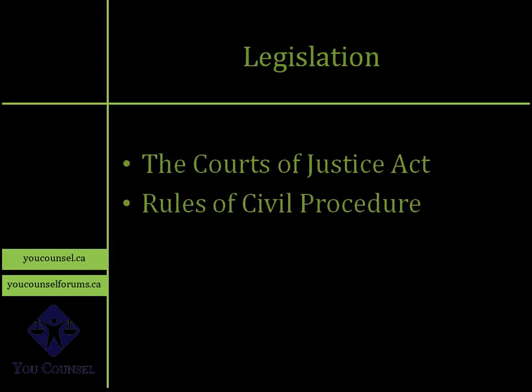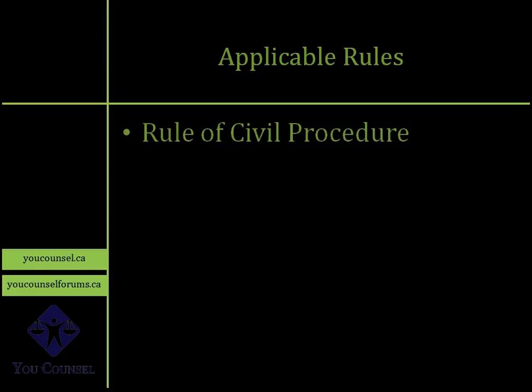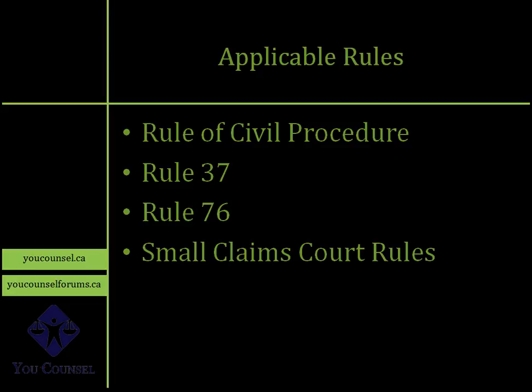There are two fundamental pieces of legislation in Ontario civil courts: the Courts of Justice Act and the Rules of Civil Procedure. Rule 37 is the specific rule that deals with motions. You must review that rule before proceeding and also review any practice directions for your region so you know how motions are brought and heard in that specific area. Rule 76, called the simplified rules, has its own rules about bringing a motion. Small claims court has its own rules as well, which you can review to understand how motions are brought there.